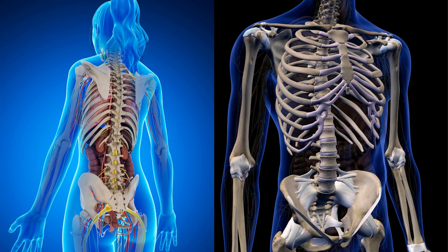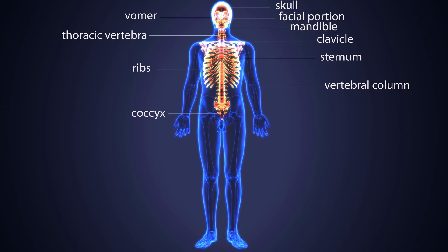The skeletal system is mainly composed of bones which are classified into two divisions: the axial and the appendicular skeleton. The axial skeleton includes the skull, vertebral column, ribs, and sternum.